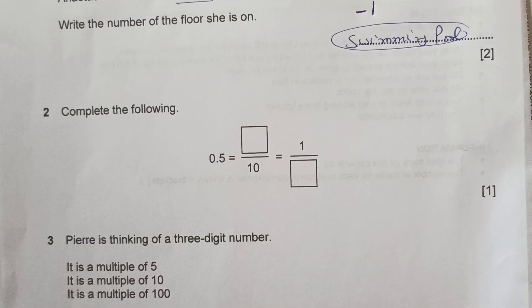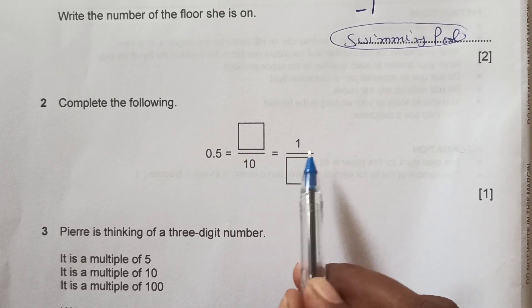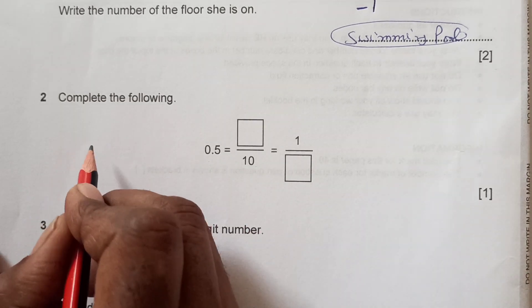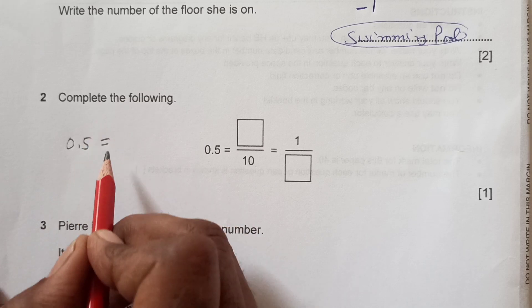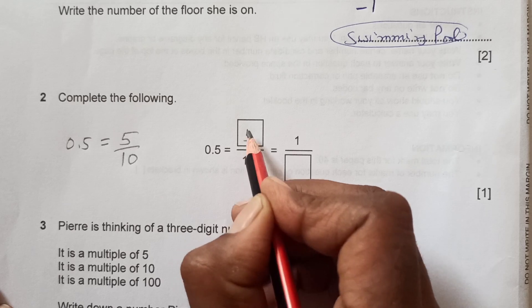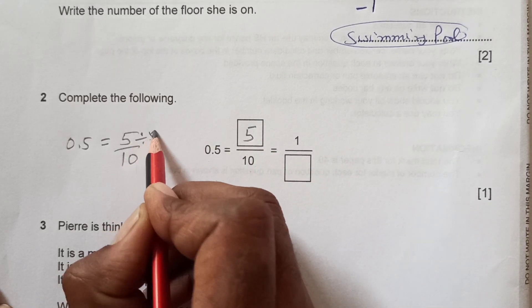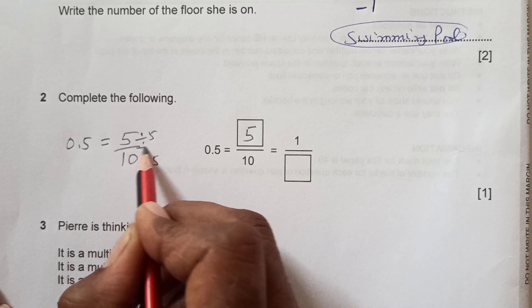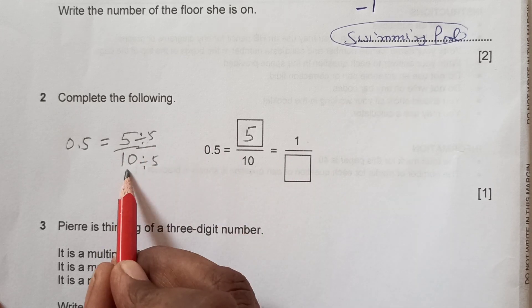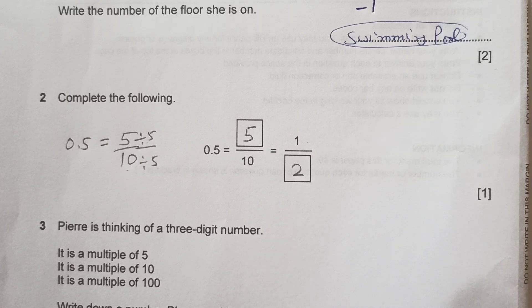Now number 2, we have here complete the following: 0.5 dash over 10 and 1 over dash. 0.5 when you remove decimal it will be 5 over 10. 5 will go up here. Then simplify, 1 over. You divide both numerator and denominator by 5. 5 divided by 5 is 1, 10 divided by 5 is 2, writing in simplest form.